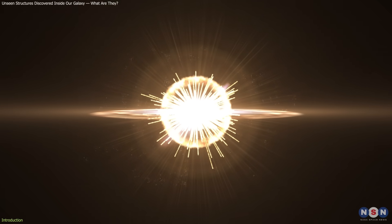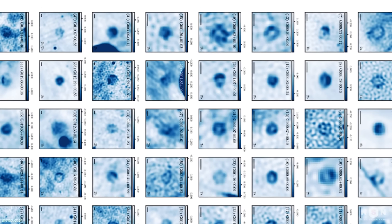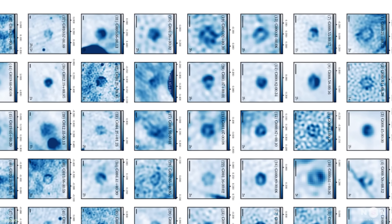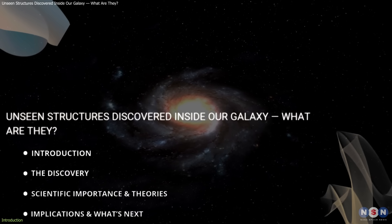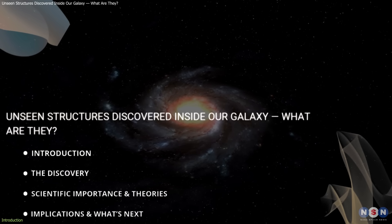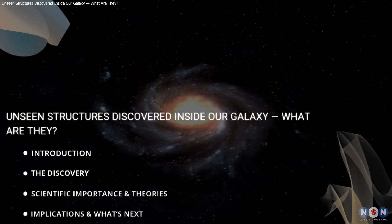Some are tied to dying stars. Others remain unexplained, hinting at astrophysical processes we haven't fully understood. In this video, we'll explore how astronomers discovered these mysterious rings, what they might represent, and why they could reshape our view of the Milky Way. Let's get started.